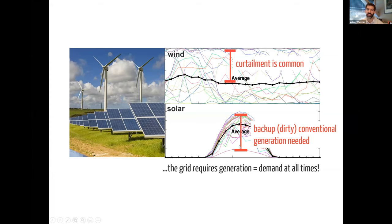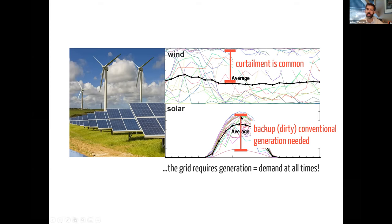Why is this a challenge? The grid requires generation to equal demand at all times in all locations. If you're planning on wind that doesn't arrive, you have to curtail the wind — that's a waste of energy and an inefficiency. On the other hand, if you're planning on the average and the wind arrives in full, you have to curtail. If you're planning on a sunny day and a cloud comes over, you need backup generation to kick in very quickly to replace that usage. That tends to be the dirtier form of conventional generation if you're going to need that quick response.